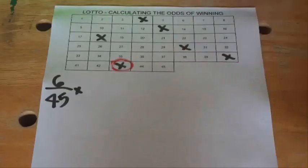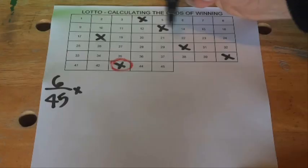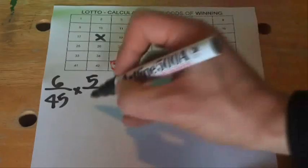When the next ball drops, you've got five chances out of 44 balls remaining in the drum, since one ball has already been selected.